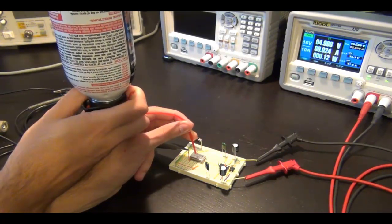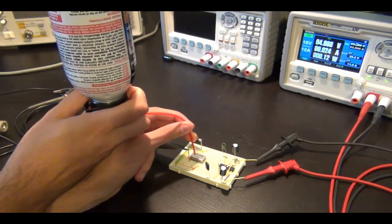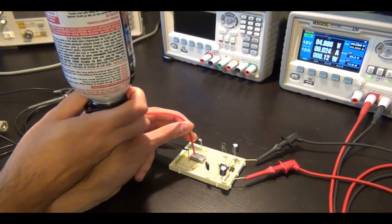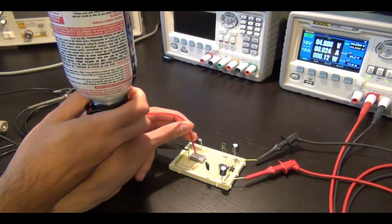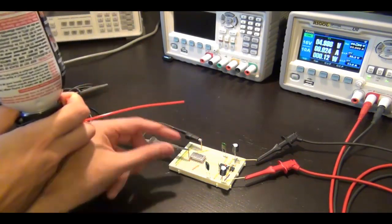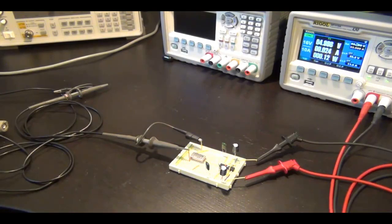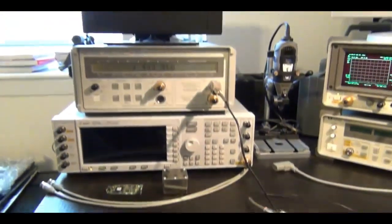So I'm going to first point the camera at the frequency counter so you can see it. Then I will spray some of this on it, and then we can see how much it changes. Then I'll bring the camera back on this so you can see it's frozen. Here we go.